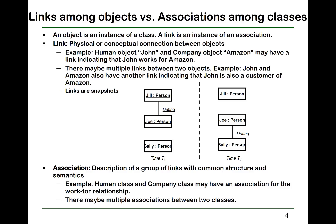Links represent the physical or conceptual connection between objects. For example, human object John and company object Amazon may have a link indicating that John works for Amazon. There may also be multiple links between two objects — for example, John and Amazon may have another link indicating that John is also a customer of Amazon. Links indicate the static relationship among objects in a system at a time instance, representing a snapshot of those relationships.